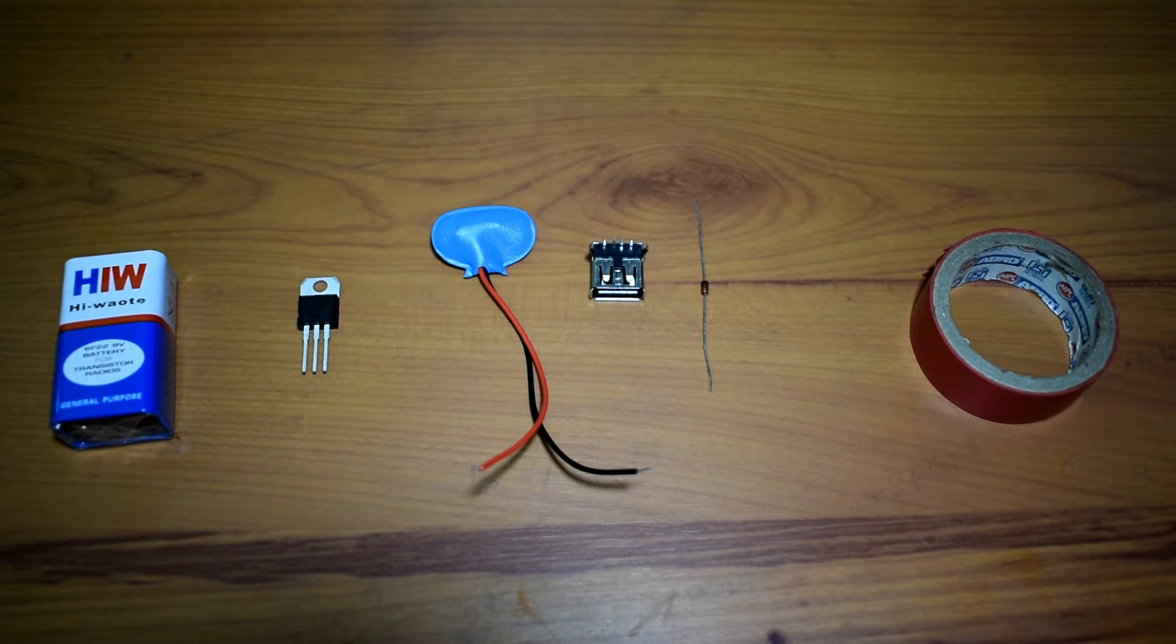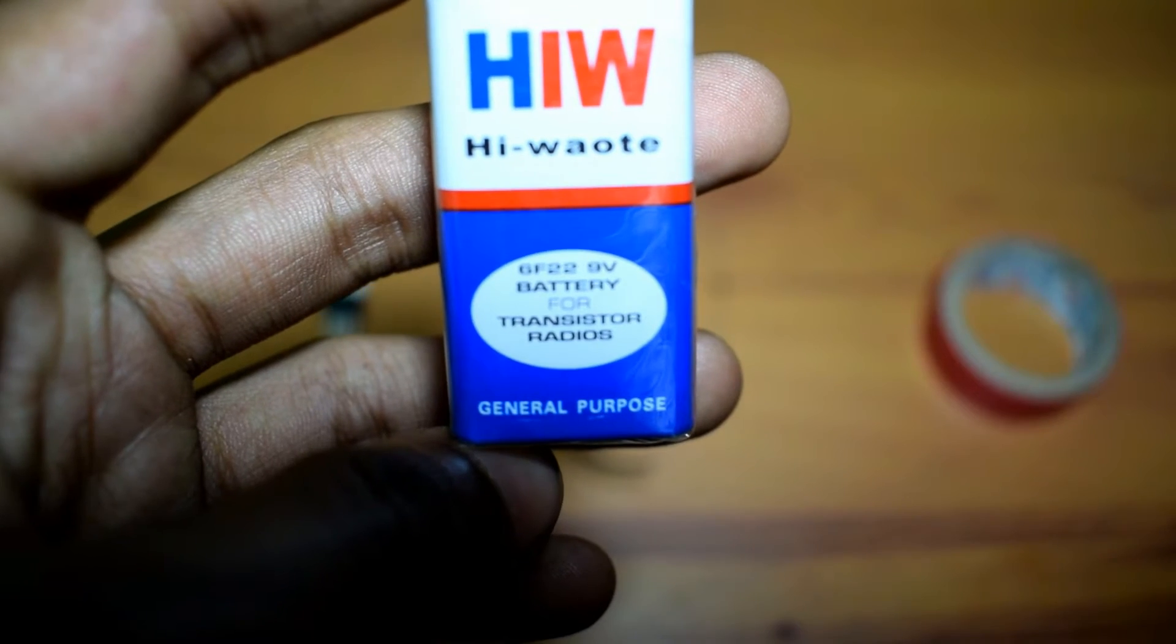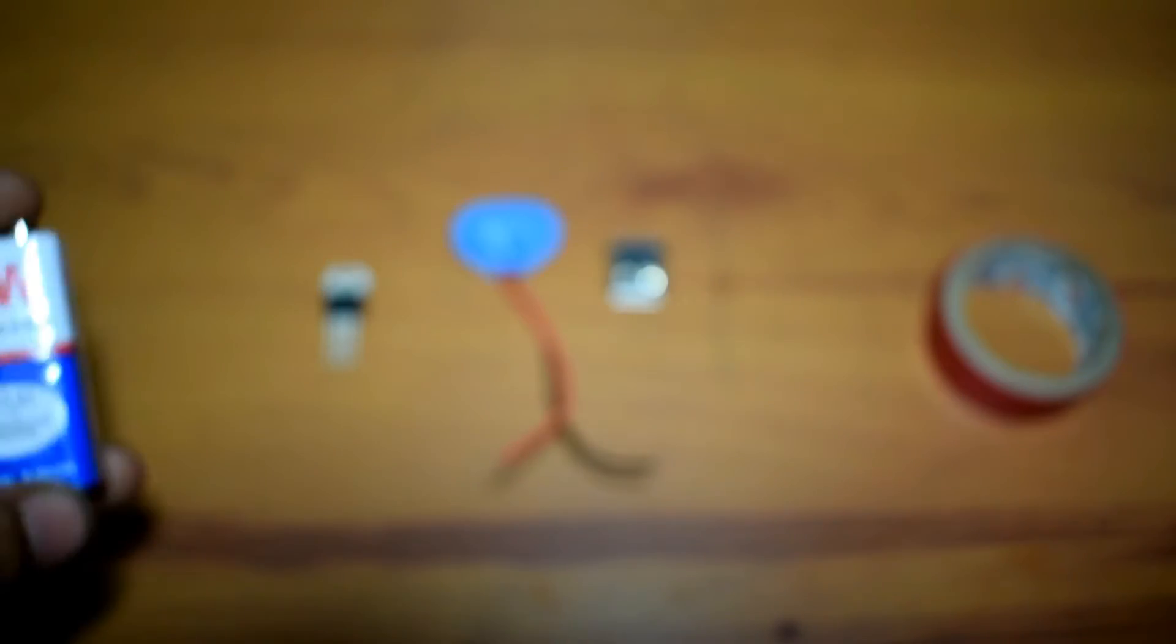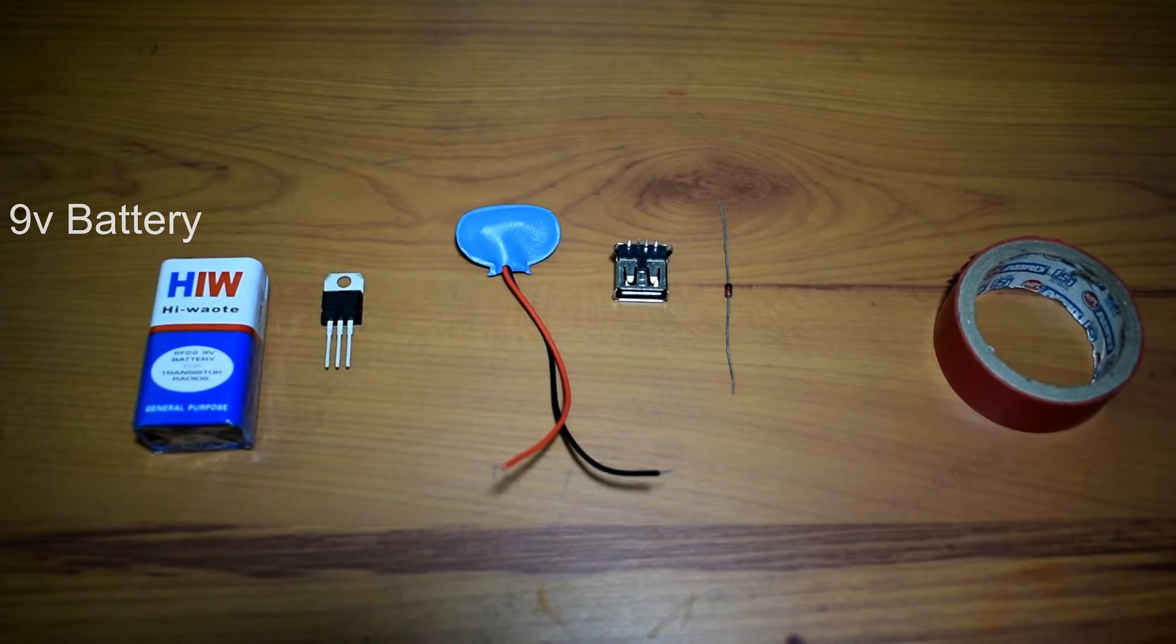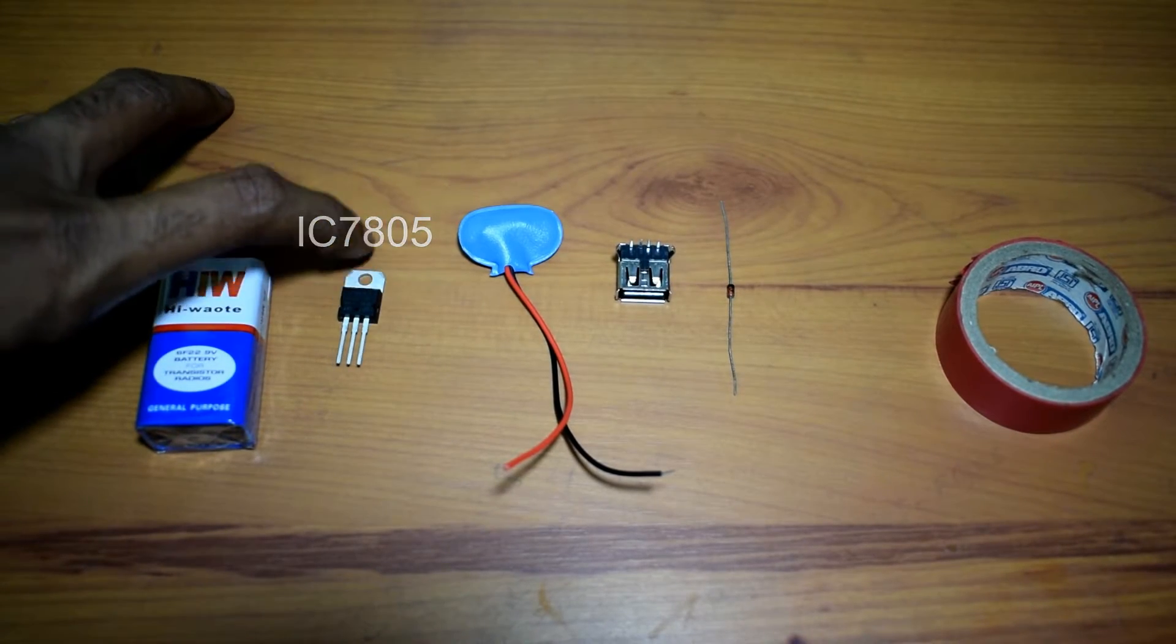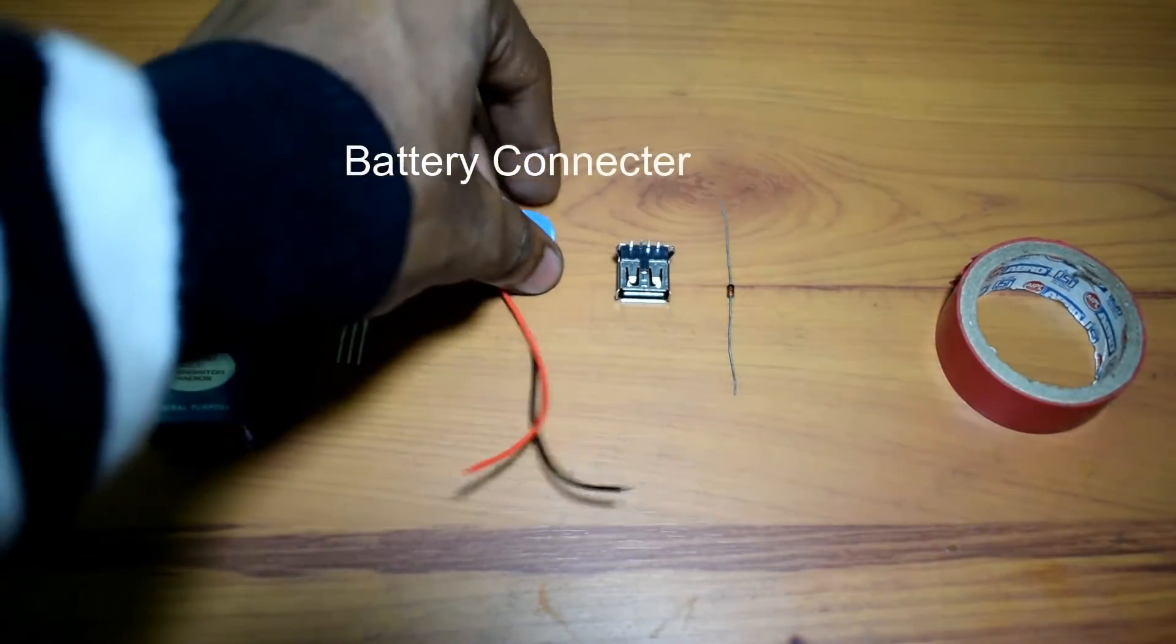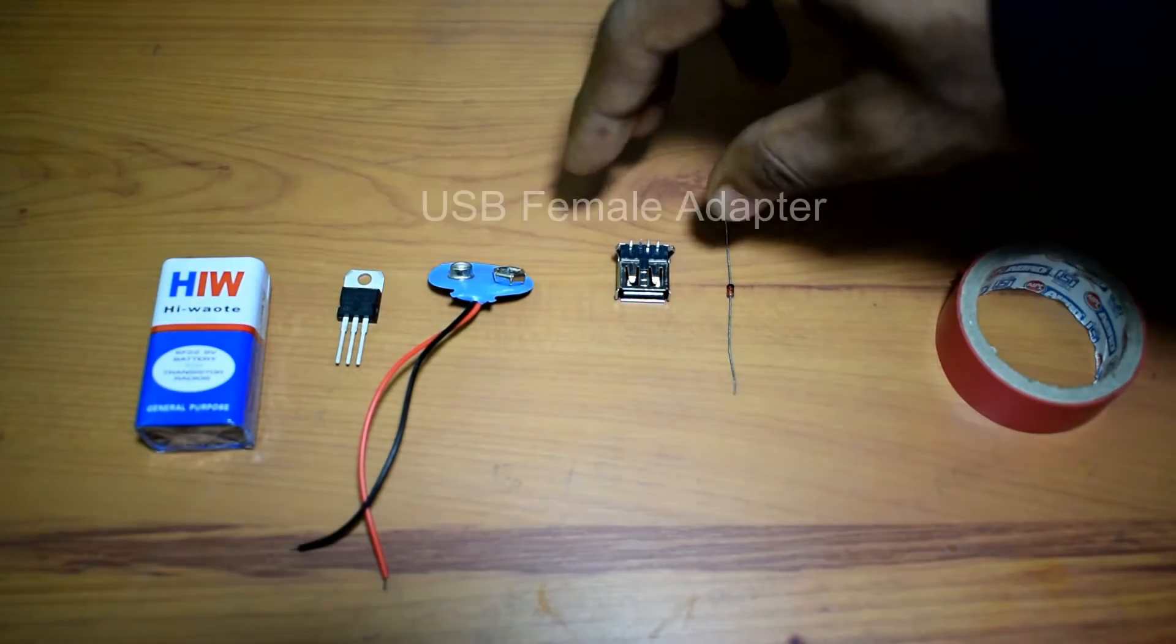Hey guys, welcome back to Tech Solutions and myself Abhishek. Today I will be showing you how to make your own power bank at home. The things you need are a 9-volt battery which you can easily get from the market, the IC 7805, a battery connector, and a USB female adapter.